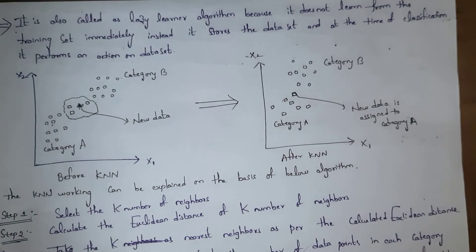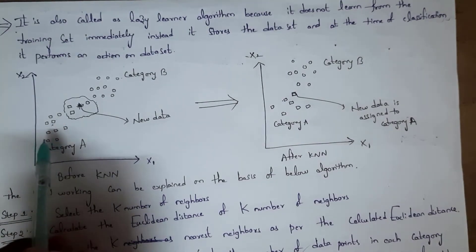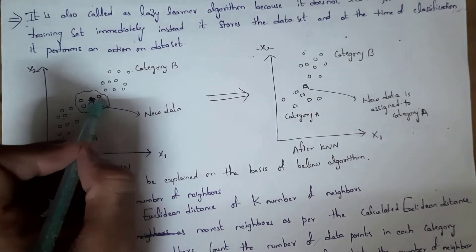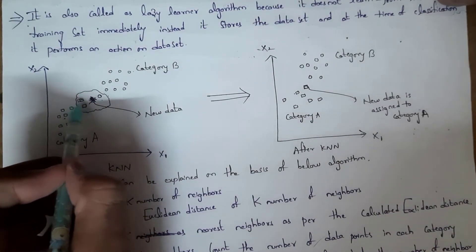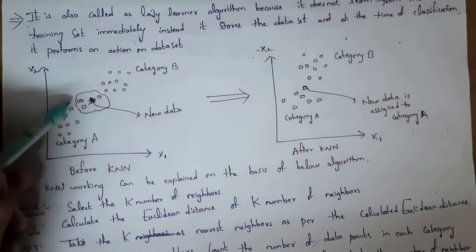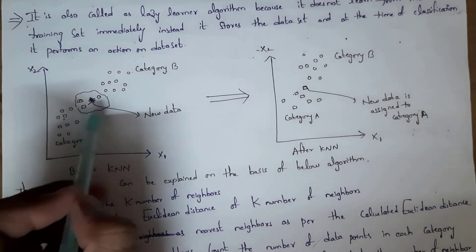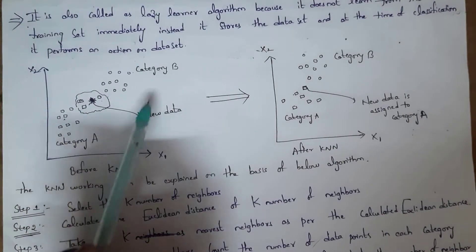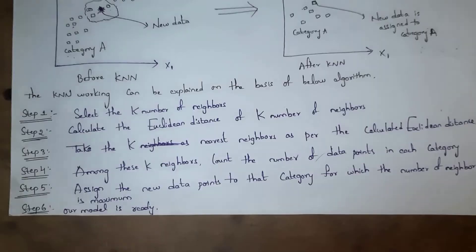Here is an example of how KNN works. There are two categories: Category A (squares) and Category B (circles). For new data, KNN finds the nearest neighbors — two squares and one circle are near the new data. Since the majority (two out of three) are squares, the new data is placed in Category A. This is why we call it the K-Nearest Neighbor algorithm.